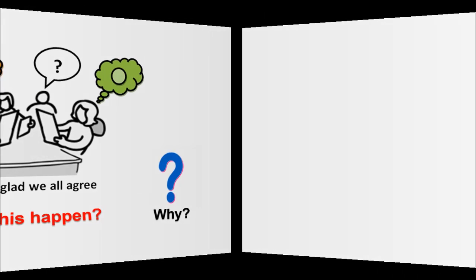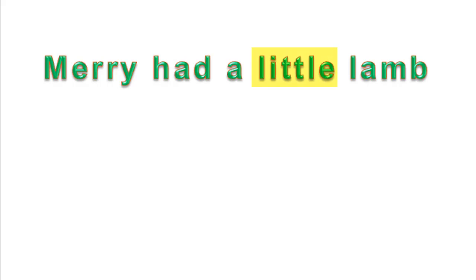Let me take an example. When I say 'Mary had a little lamb,' what does it mean to you? Well, it could mean Mary had a little lamb — not a dog. Mary had a little lamb — not a big one. Mary had a little lamb — and doesn't have it anymore. Mary had a little lamb — not John.